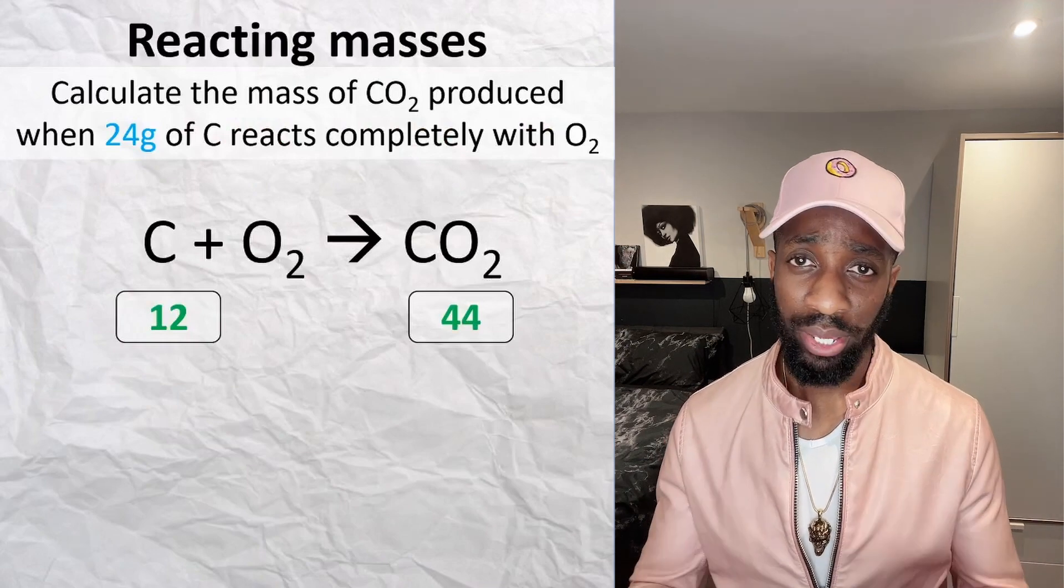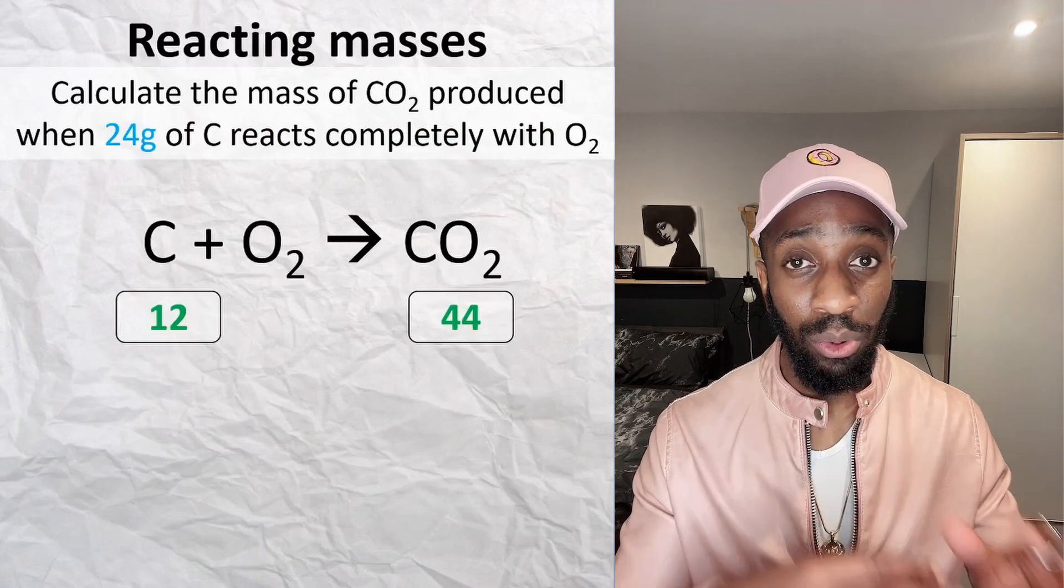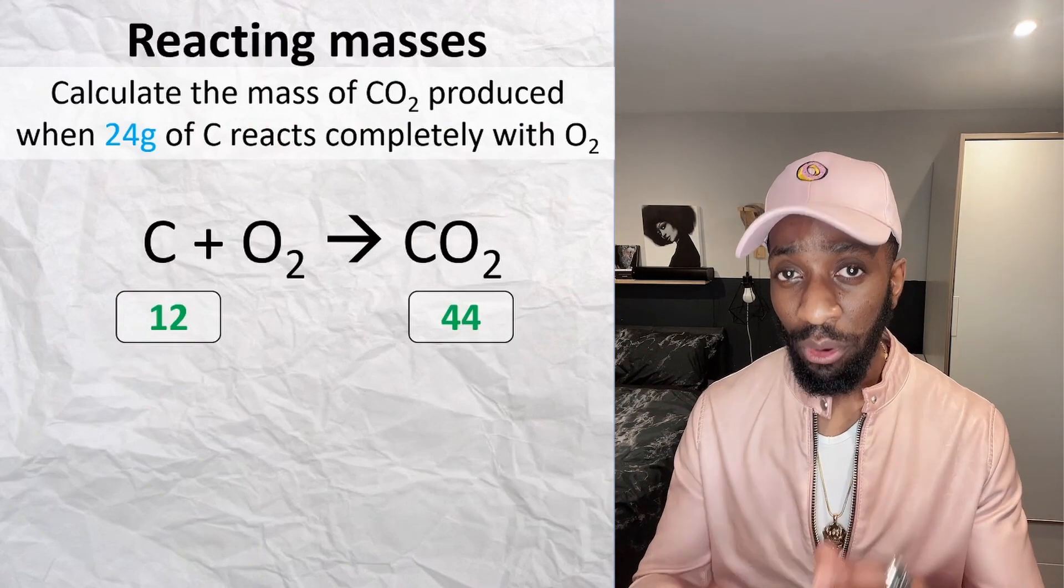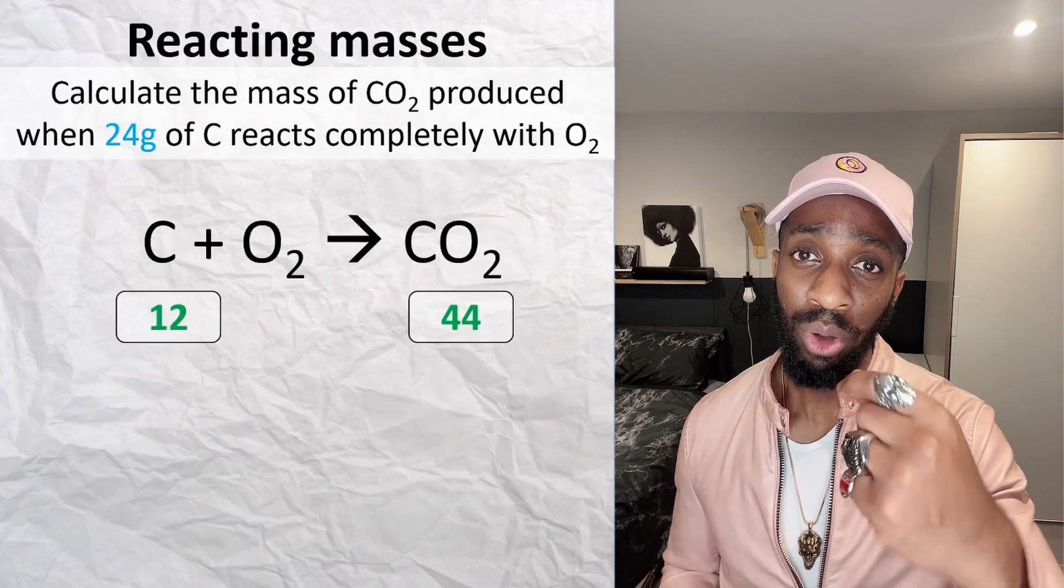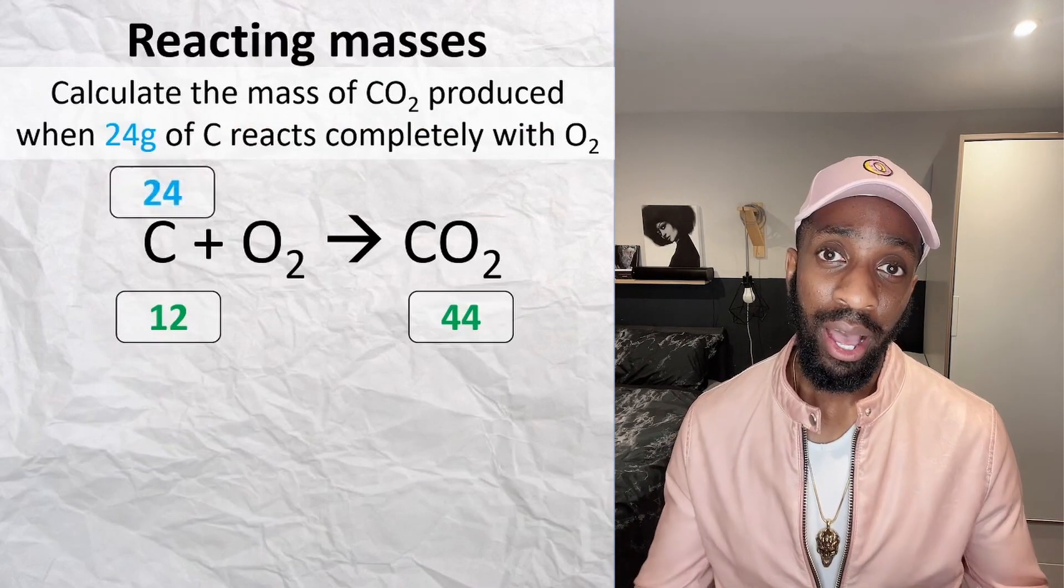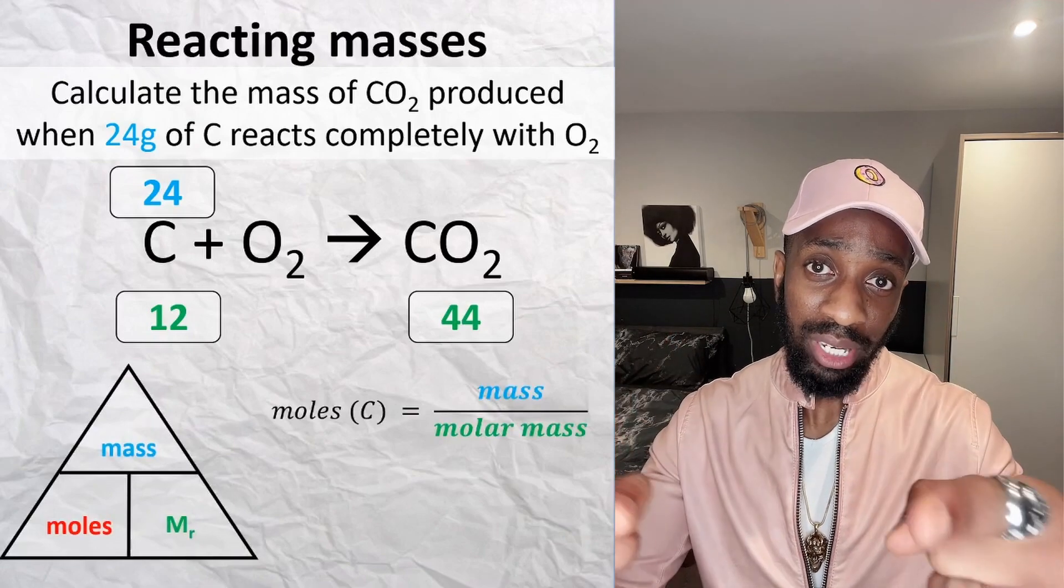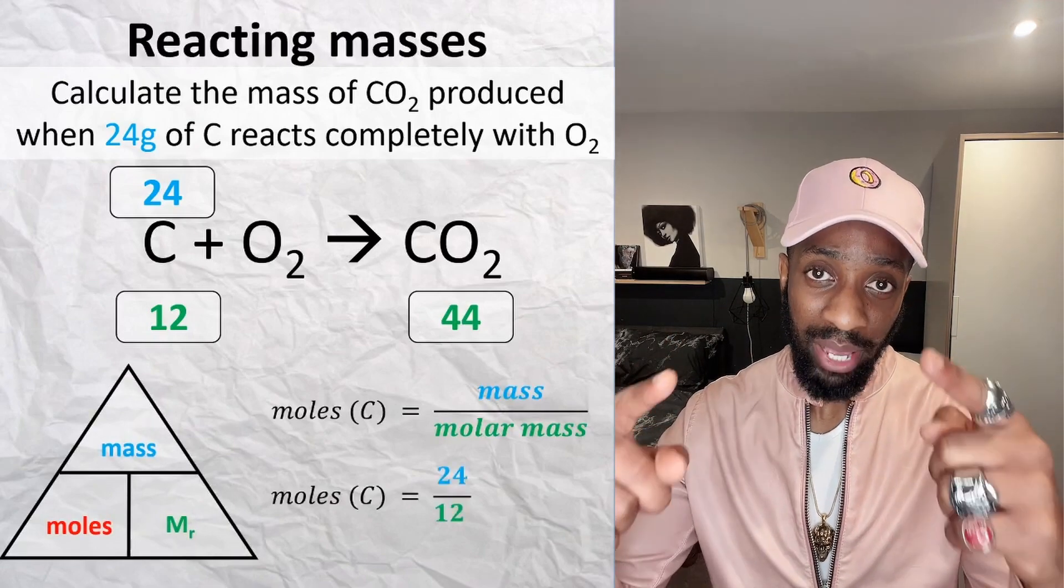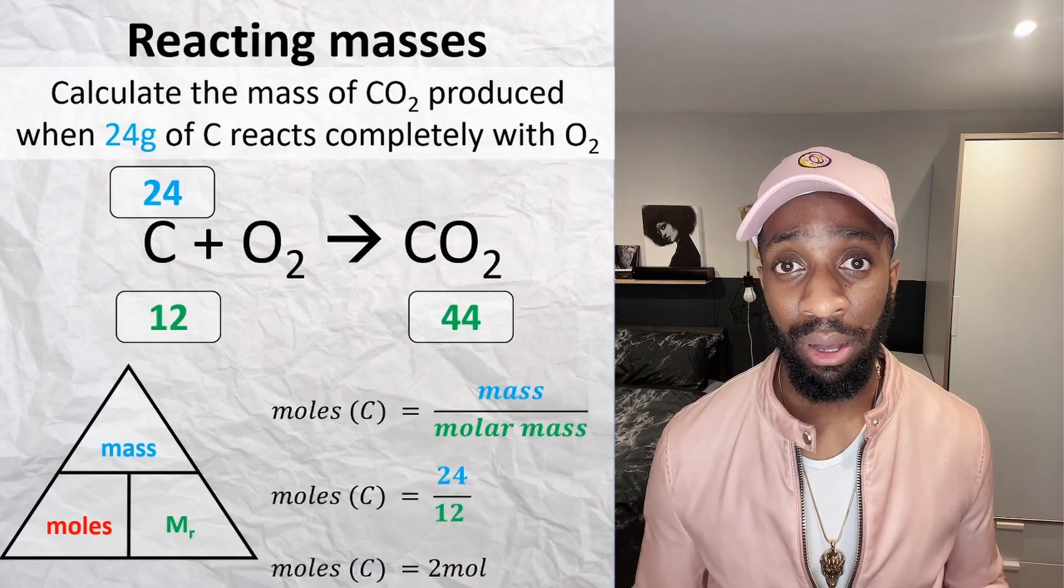Remember, the first step is to work out the moles of the substance that we have the mass for in the question. We've got 24 grams of carbon, so that means that the 24 is going to go above the carbon, and then we do the calculations the way we see it. So that's the 24 divided by the 12—that's the mass divided by the molar mass, which will give us two moles of carbon.